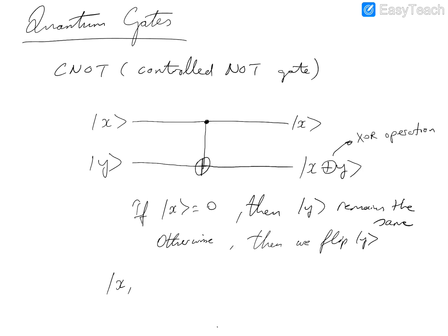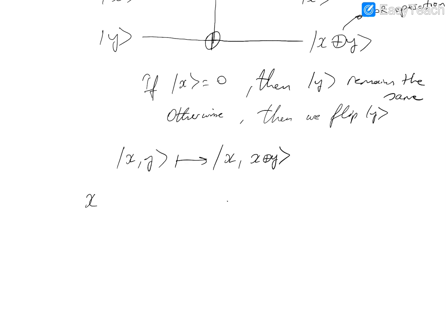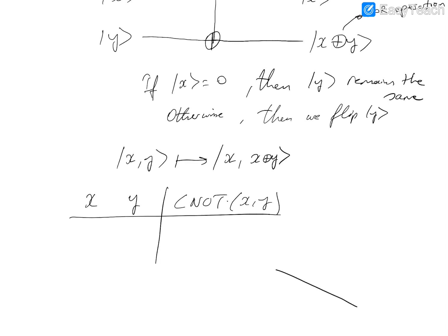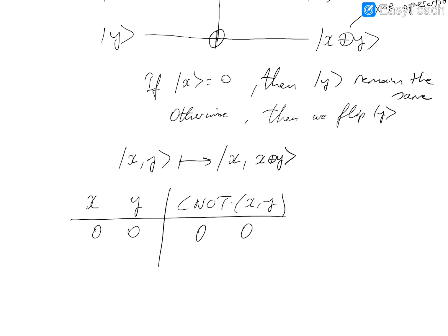The CNOT gate takes two qubit input and maps to X, X XOR Y. The truth table can be written with X and Y in two columns and CNOT(X,Y) as output. On input 0,0: control bit is 0, so output is 0,0. On input 0,1: control bit is still 0, output is 0,1. On input 1,0: we flip the second qubit, output is 1,1. On input 1,1: output is 1,0.